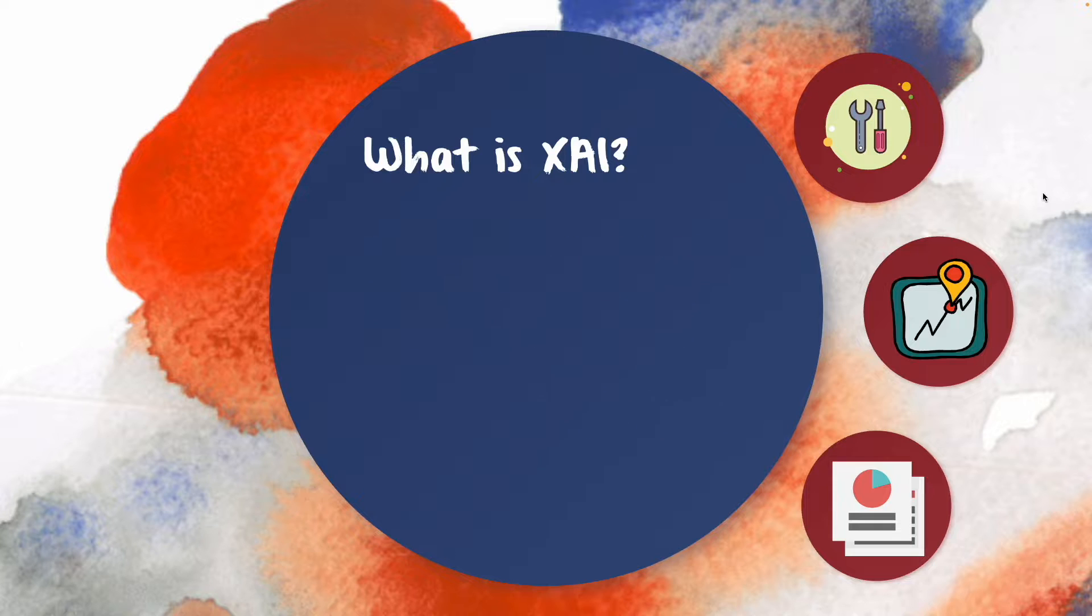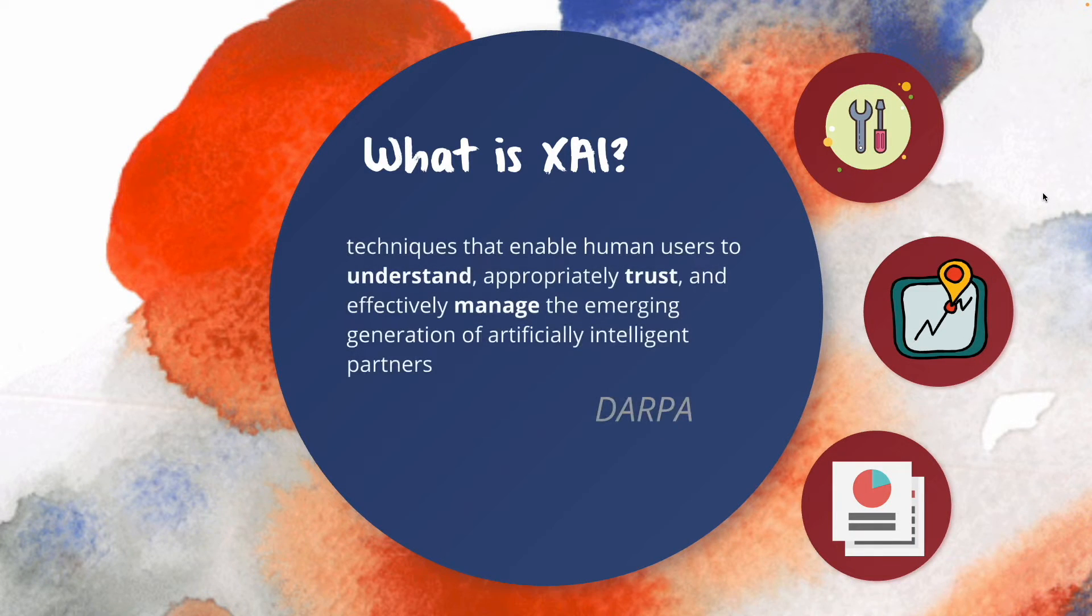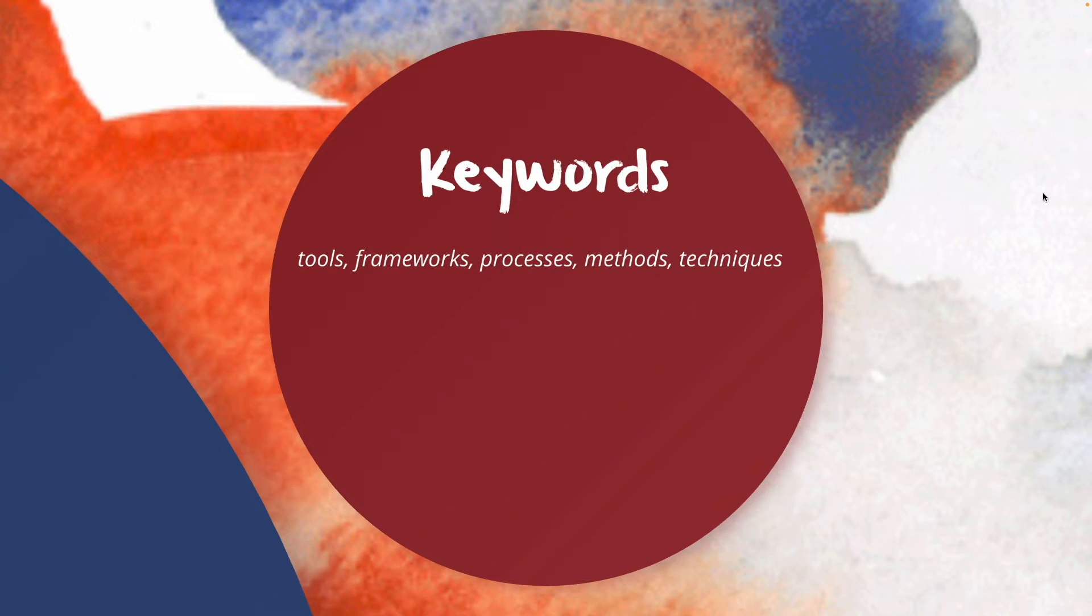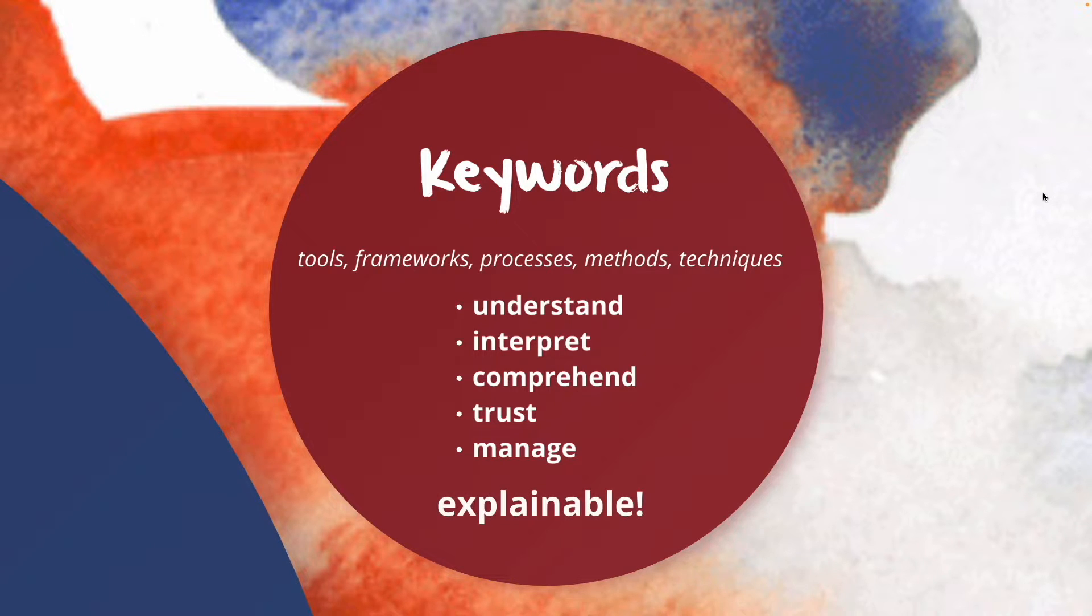And the third and the last definition from DARPA: explainable AI is techniques that enable human users to understand, appropriate the trust, and effectively manage the emerging generation of artificial intelligence partners. So similar definitions and if you look at the keywords, we can use or develop some tools, frameworks, design processes, methods, or techniques to make the artificial intelligence understandable, interpretable, comprehensible, trustable, and manageable. In other words, explainable.